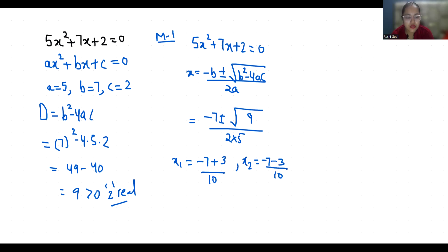So x₁ is -4 by 10 which is equal to -2/5, and x₂ is -10 by 10 which is equal to -1.